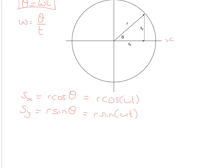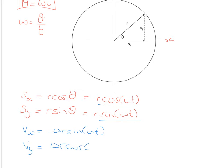We want an expression for velocity, and we know velocity is the derivative of displacement — the rate of change of displacement. Taking the derivative with respect to t (using A-level maths): cosine differentiates to minus sine, and the omega from inside the bracket comes outside. So the x-velocity is −ωr sin(ωt). In the y-direction, sine differentiates to cosine, giving y-velocity as ωr cos(ωt).